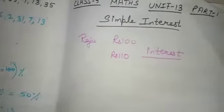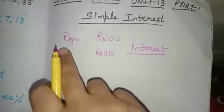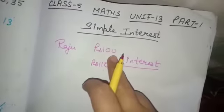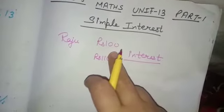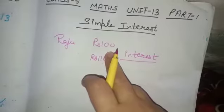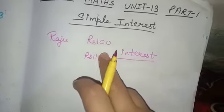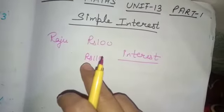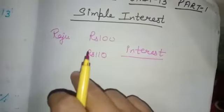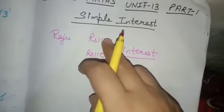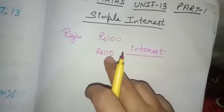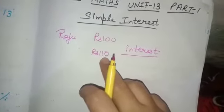Once a boy named Raju deposited rupees 100 in a bank. After one year, he goes to the bank and asks about his money. Then the manager replied, 'Raju, your rupees 100 has now become rupees 110.'